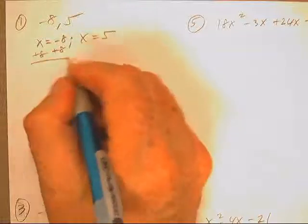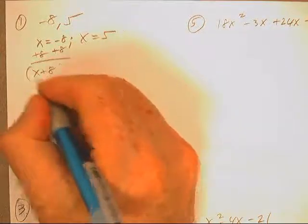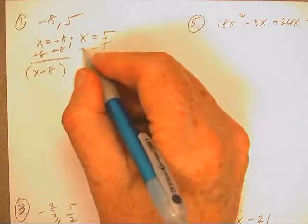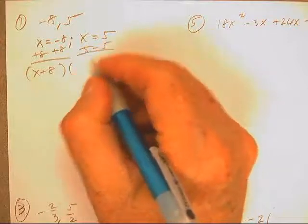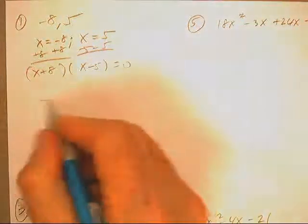Add 8 to both sides on that one. x plus 8, there's one factor. Subtract 5 on that one. The other factor is x minus 5 equals 0.